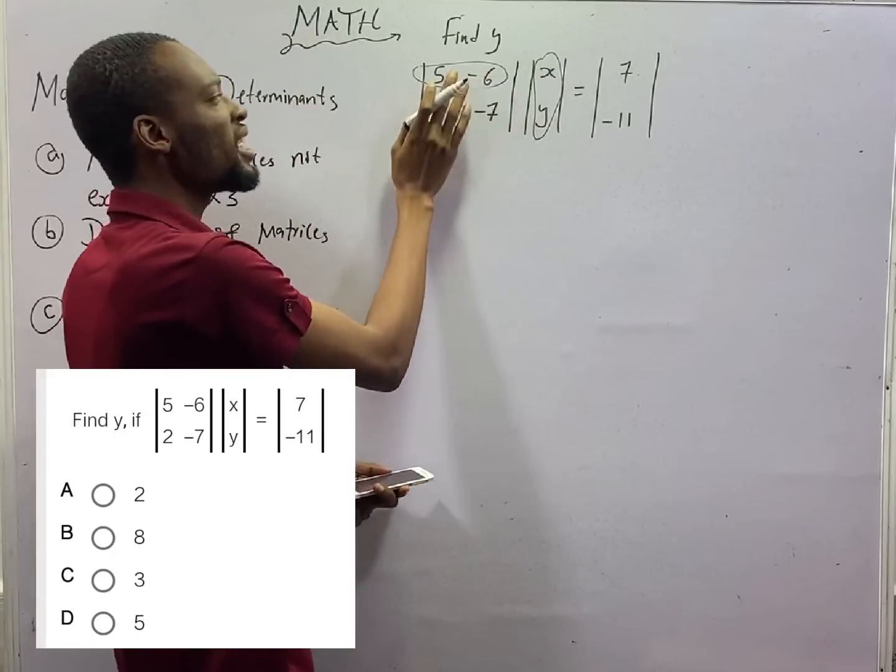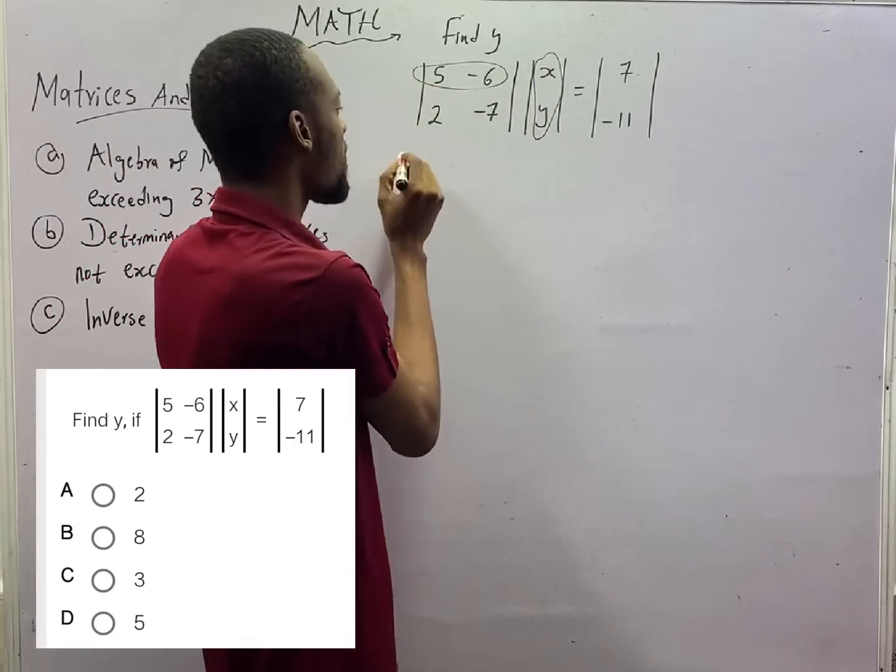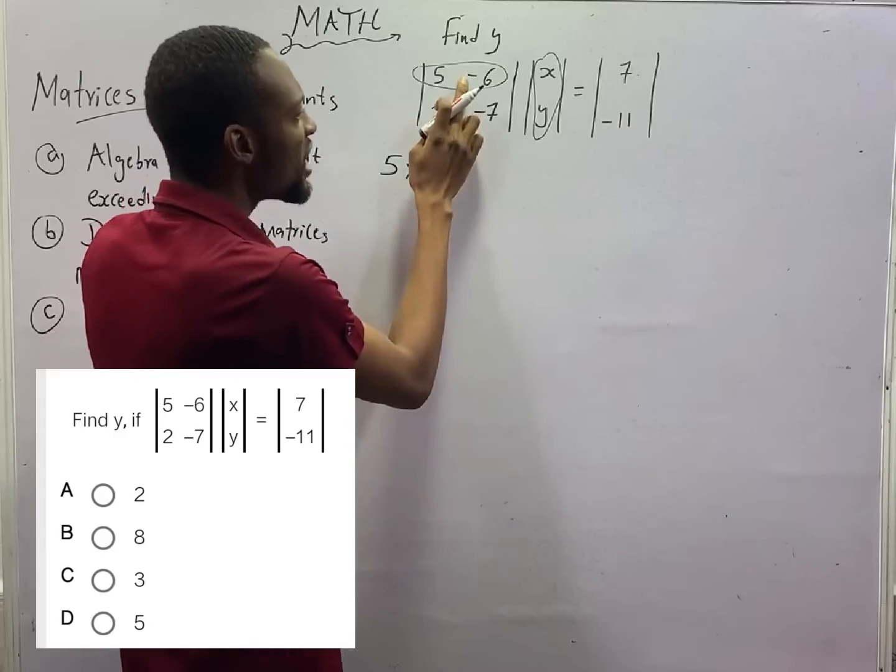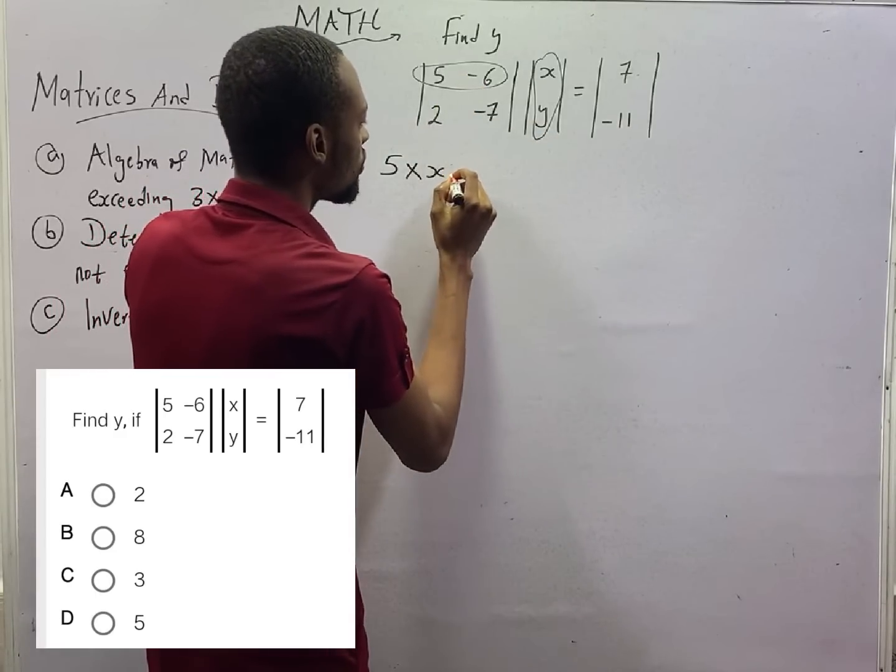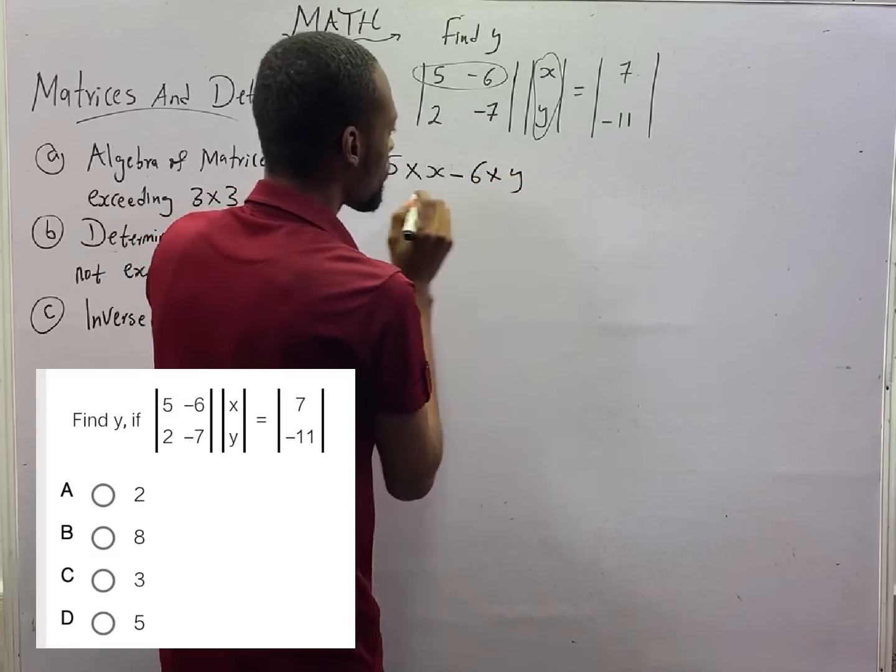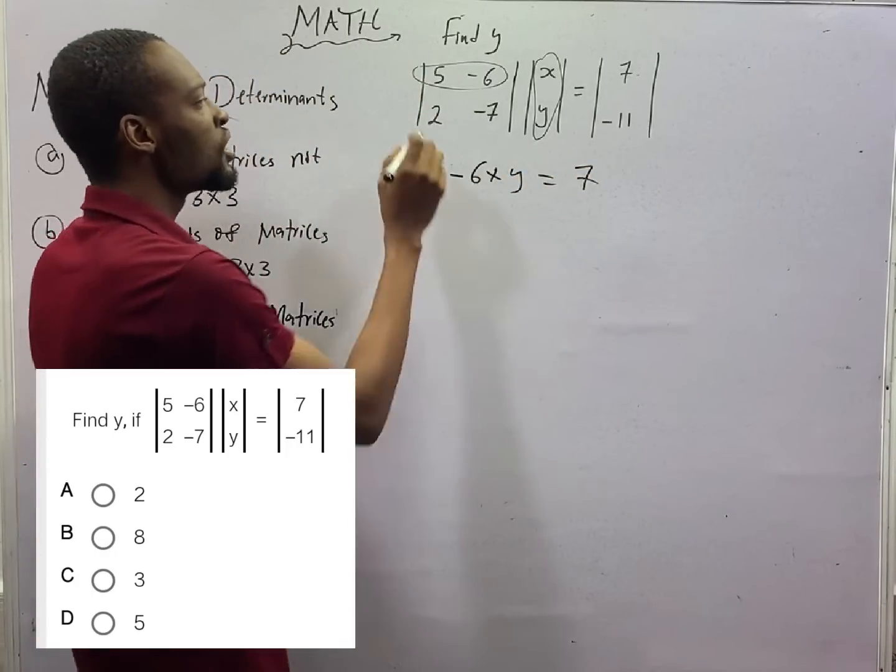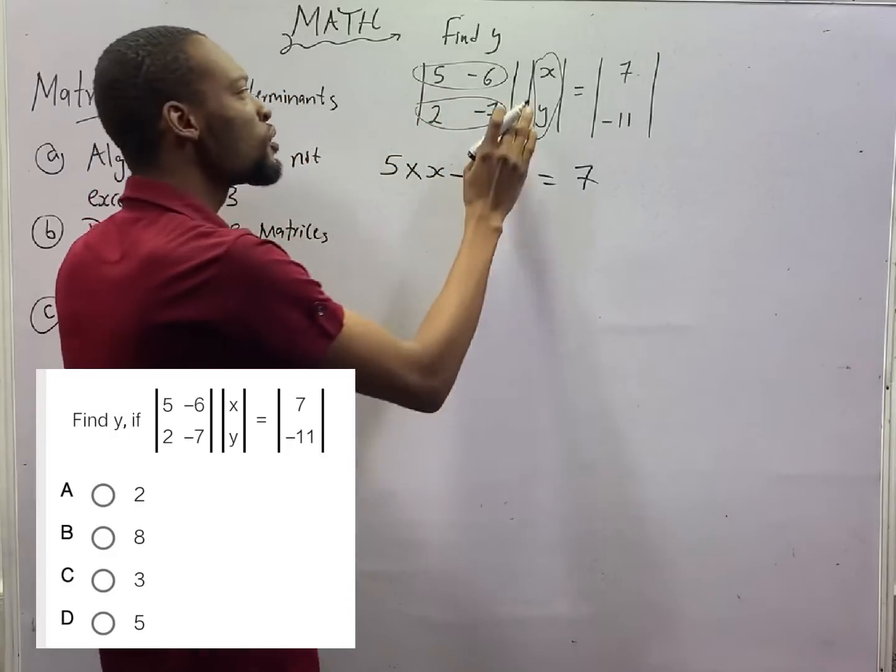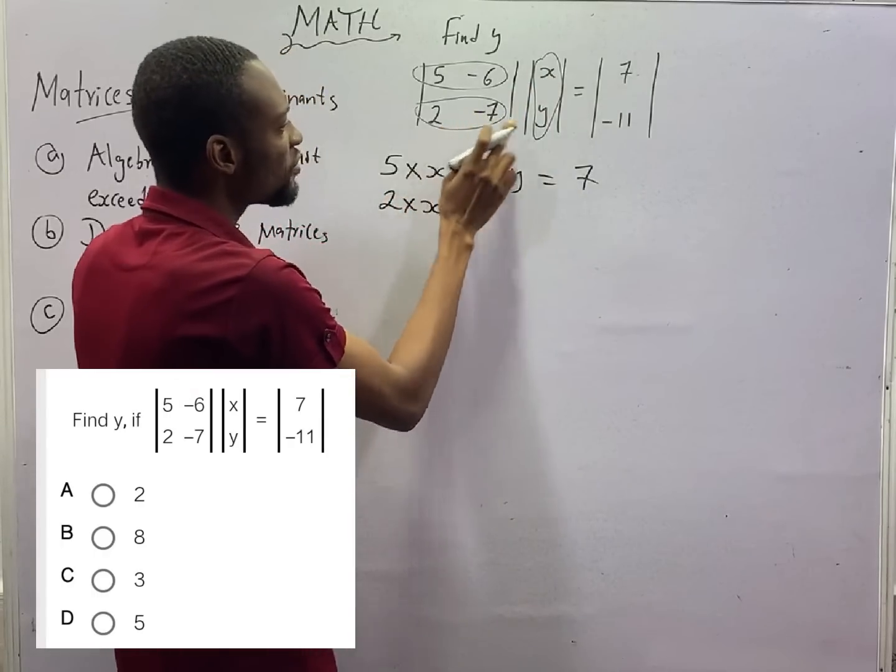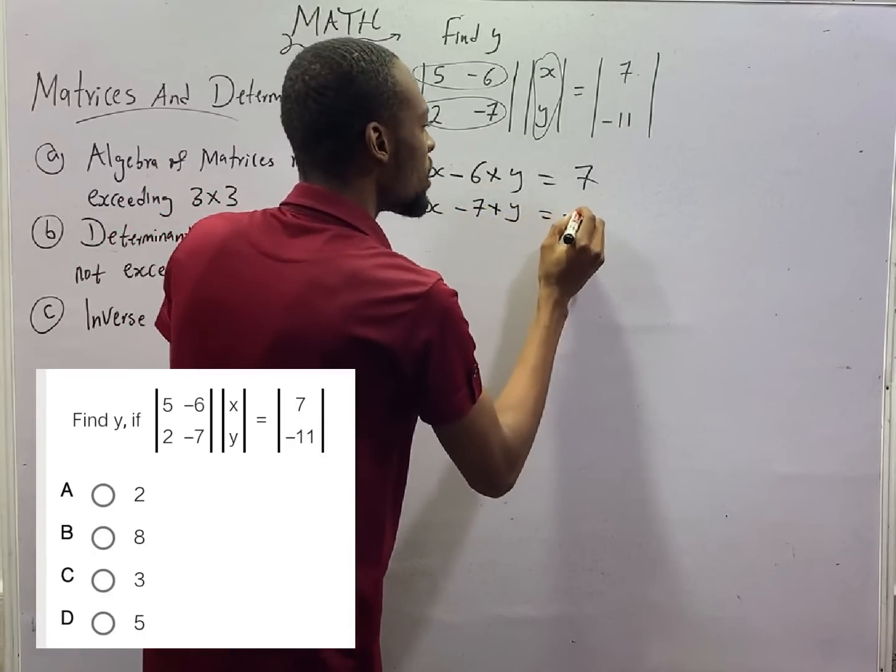You use each of the numbers here or values here to multiply each of the ones here. Look at this. You pick out 5. You say 5 times S. Then you say minus 6 times Y. Minus 6 times Y. Also, you pick out these two. You use them to multiply this guy. That would be 2 times S. 2 times S. Minus 7 times Y. Minus 7 times Y. This would be equal to minus 11.